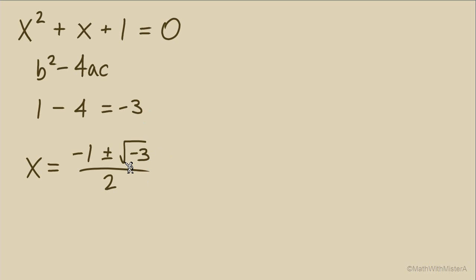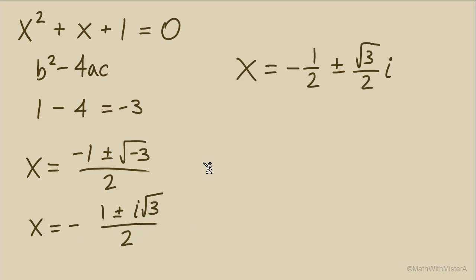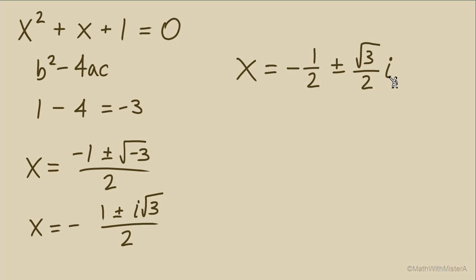We simplify the square root of negative 3 by bringing an i outside of the radical. x equals negative 1 plus or minus i radical 3 over 2. We can take this one step further and split it into two separate fractions, since we have only one term in the denominator 2. We end up with the real part and the imaginary part as two distinct terms. Negative 1 half is the real part; radical 3 over 2, the coefficient of i, is the imaginary part. Together they make the complex number. Our two answers are negative 1 half plus radical 3 over 2i, and negative 1 half minus radical 3 over 2i.